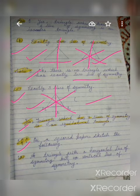Question Number 5: on a square paper, sketch the following. Part A — a triangle with a horizontal line of symmetry but no vertical line of symmetry. Take the square paper and make a triangle in which you need a horizontal line of symmetry but you should not make a vertical line of symmetry.